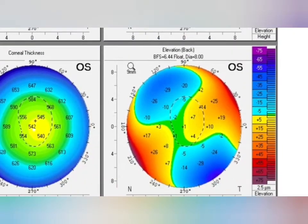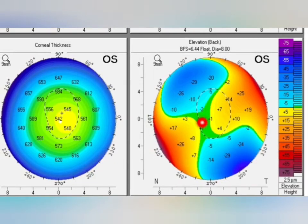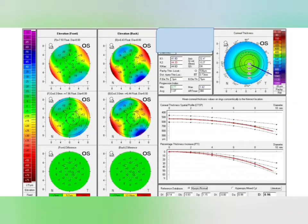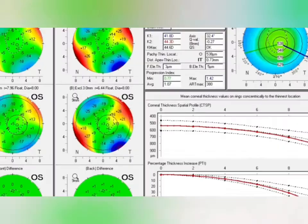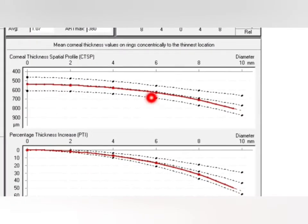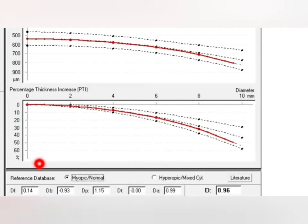In elevation front, the thinnest local corresponding point is plus 3 — less than plus 8, normal. In elevation back it is less than plus 7, and in the central 3mm area it is less than 20 — absolutely normal. The corneal thickness map shows the thinnest point at 542, which is more than 470, so normal. In the Belin-Ambrósio map, the average value is 1.07 — absolutely normal — and the red curve is continuous up to 6mm. The D mean value is less than 1.2, also absolutely normal.